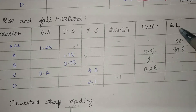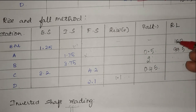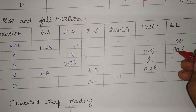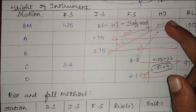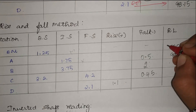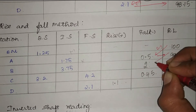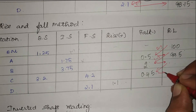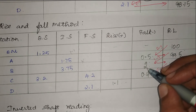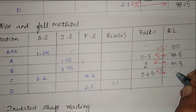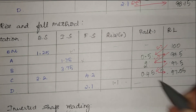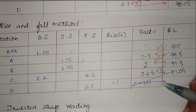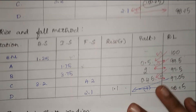In the rise and fall method, each successive RL is derived from the previous one rather than a fixed HI reference. Since the fall is 2, RL of B = 99.5 − 2 = 97.5. Then RL of C = 97.5 − 0.45 = 97.05. Since it is a rise of 1.1, RL of D = 97.05 + 1.1 = 98.15. Both methods give the same results, and you can use whichever you find easier.